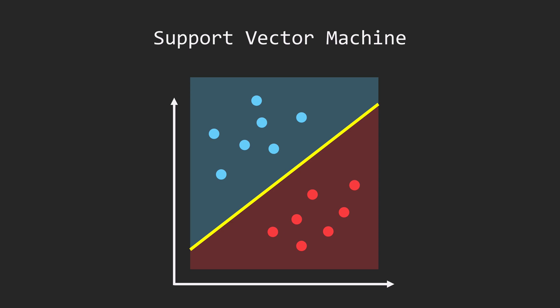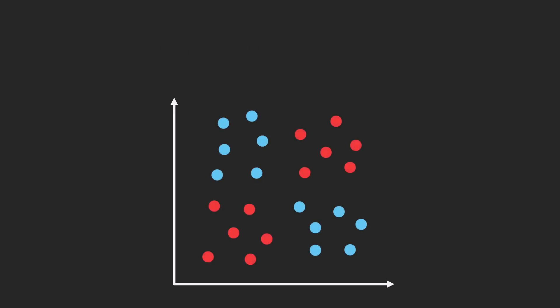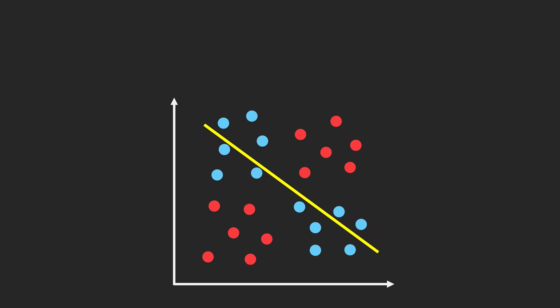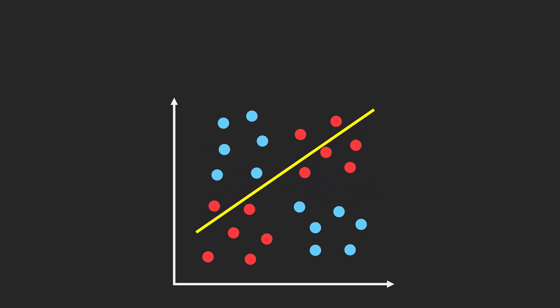However, real-world data is usually more complex. Often, datasets cannot be separated by a straight line – these are non-linearly separable. The XOR dataset is a common example. How can we handle this using SVM?